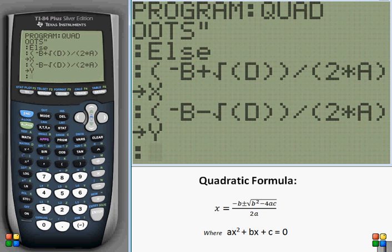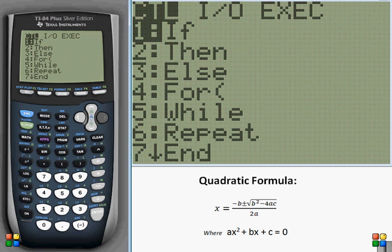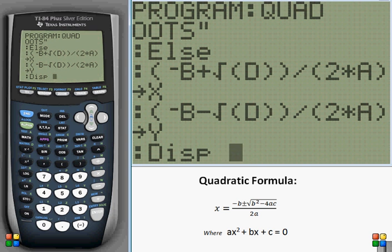And now we need to display all that. So we go display, open the text string, x equals, equals, no, close the text string, comma,